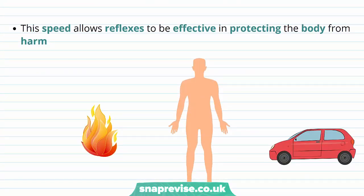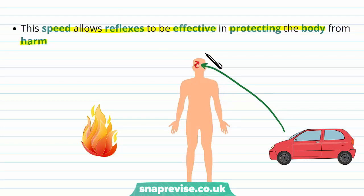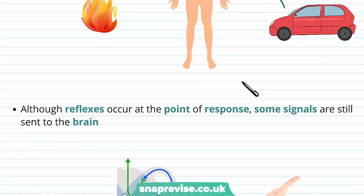This means that reflexes are a very effective and evolutionarily maintained way of protecting the body from harm. And it doesn't just have to be towards hot things — it can be, for example, seeing an oncoming car very quickly with your eyes and making a quick reflex arc that causes us to run away or jump or look quickly. So there are various different reflexes found in the body.